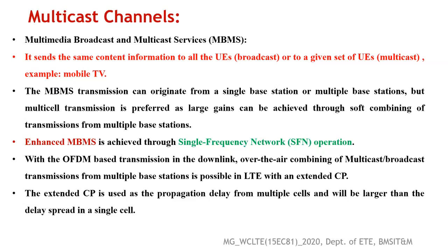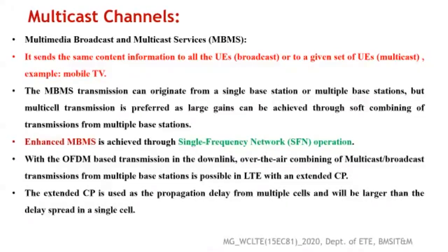The problem with multicell transmission is that the receiver complexity is very high — the receiver has to receive signals from multiple base stations, and may face inter-symbol interference as well as inter-cell interference. Designing a robust receiver is a big challenge. This service was provided in UTRAN, a 3G standard, and LTE was designed to enhance the MBMS service. In LTE, MBMS can be enhanced through Single Frequency Network operation, or SFN.